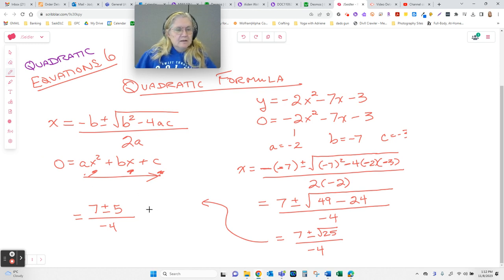So our answers end up, 7 plus 5 is 12, divided by minus 4 is negative 3. 7 minus 5 is 2, over negative 4 will be negative 1 half. If you need to write those down to see them do that. There are the solutions to this equation. They are the x-intercepts for this function. So they would help you sketch it and do a better job of sketching it.